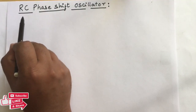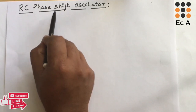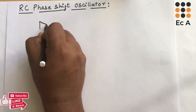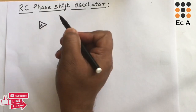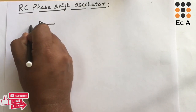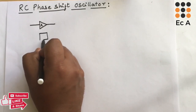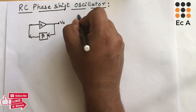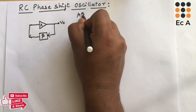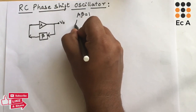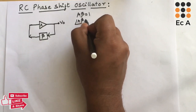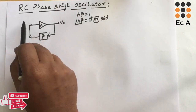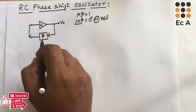Hello friends, welcome to EC Academy. In this lecture we will understand the RC phase shift oscillator. Generally, any oscillator consists of two stages: the amplifier stage and the feedback stage. Any oscillator must satisfy the Barkhausen criteria, which states that A·β should be equal to 1 and the phase angle between input and output should be equal to 0° or 360°.